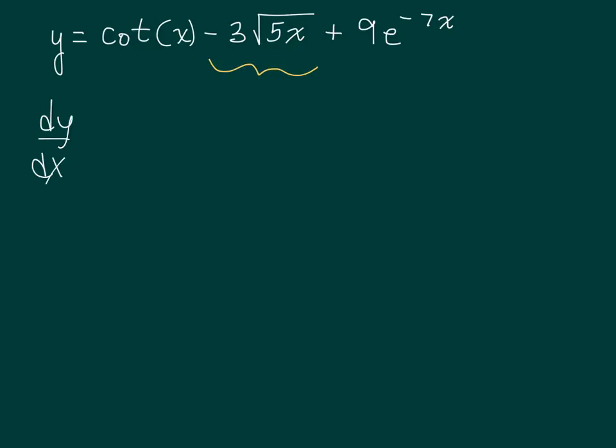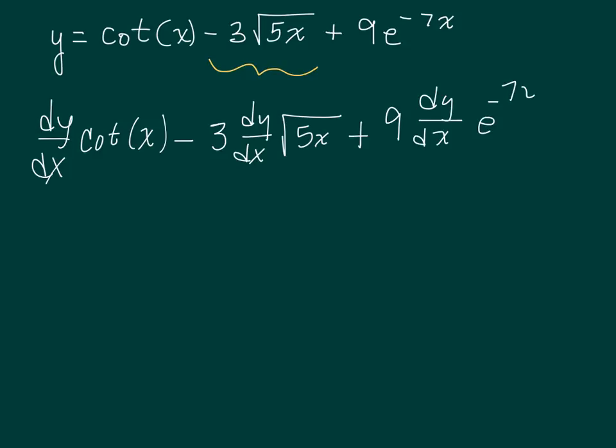Meaning I want to find the derivative of cotangent x minus, whenever I have a constant I'm going to throw it out front and find the derivative of square root of 5x, plus I have another constant and I'm going to find the derivative of e to the negative 7x.